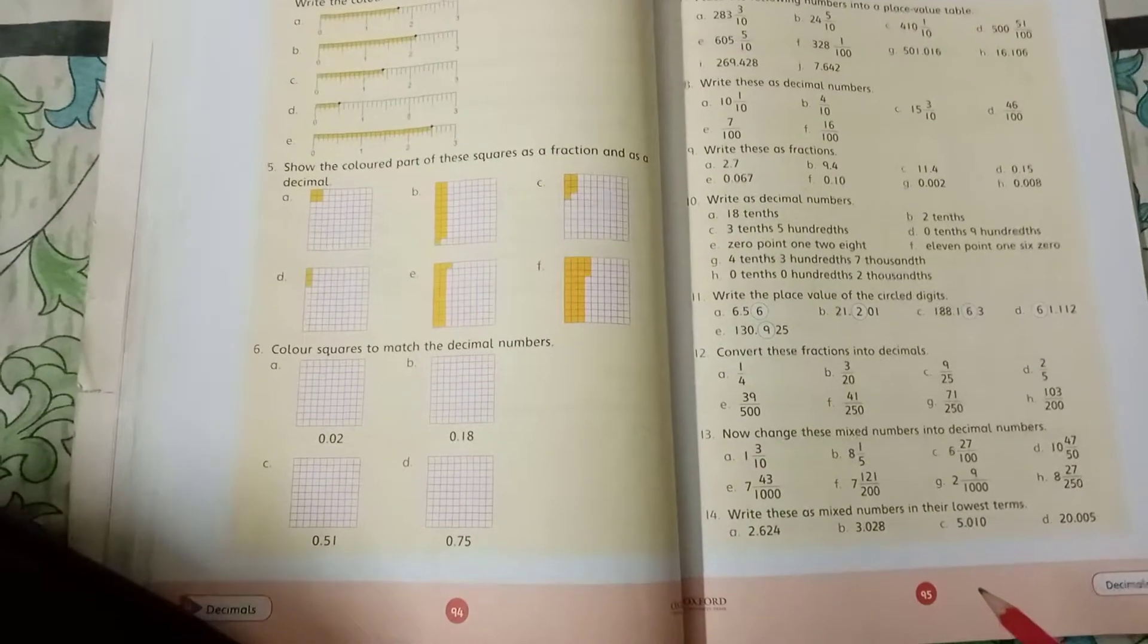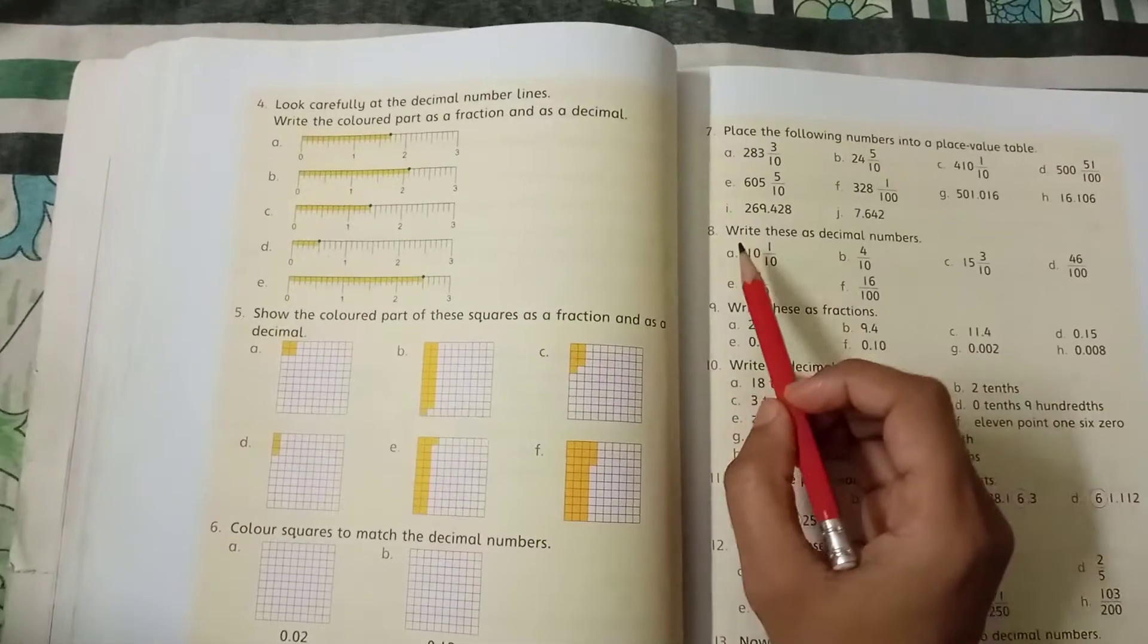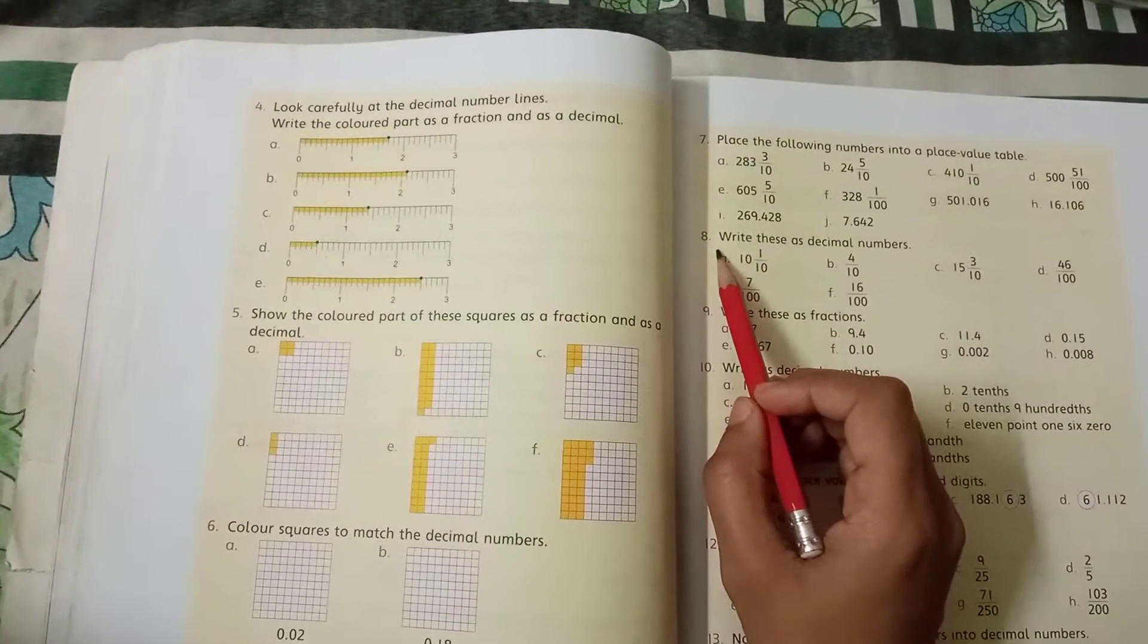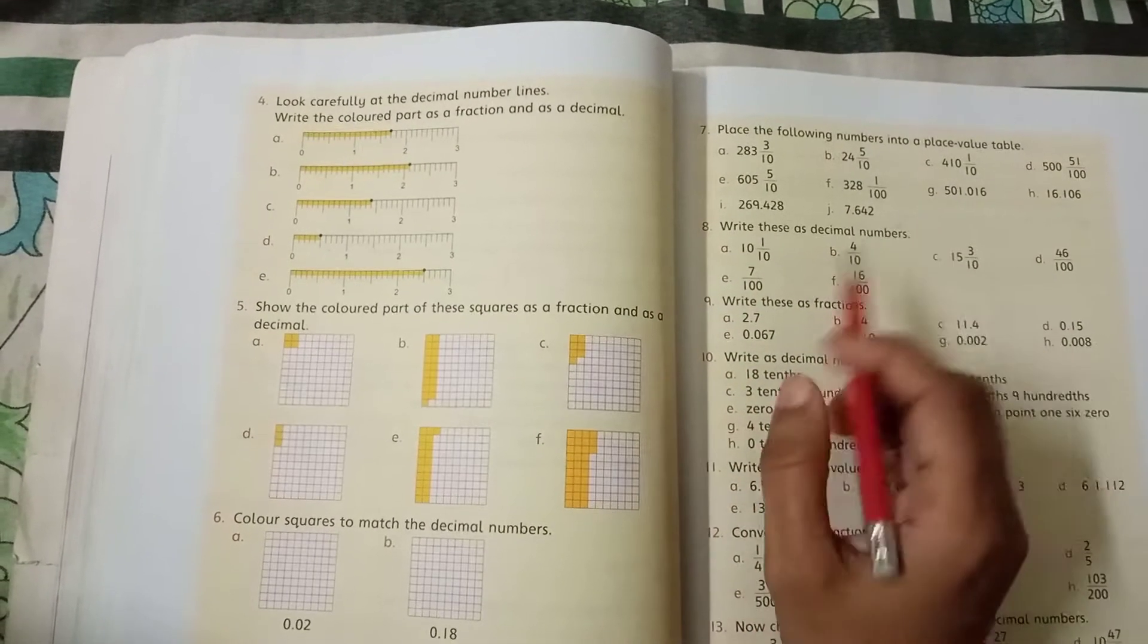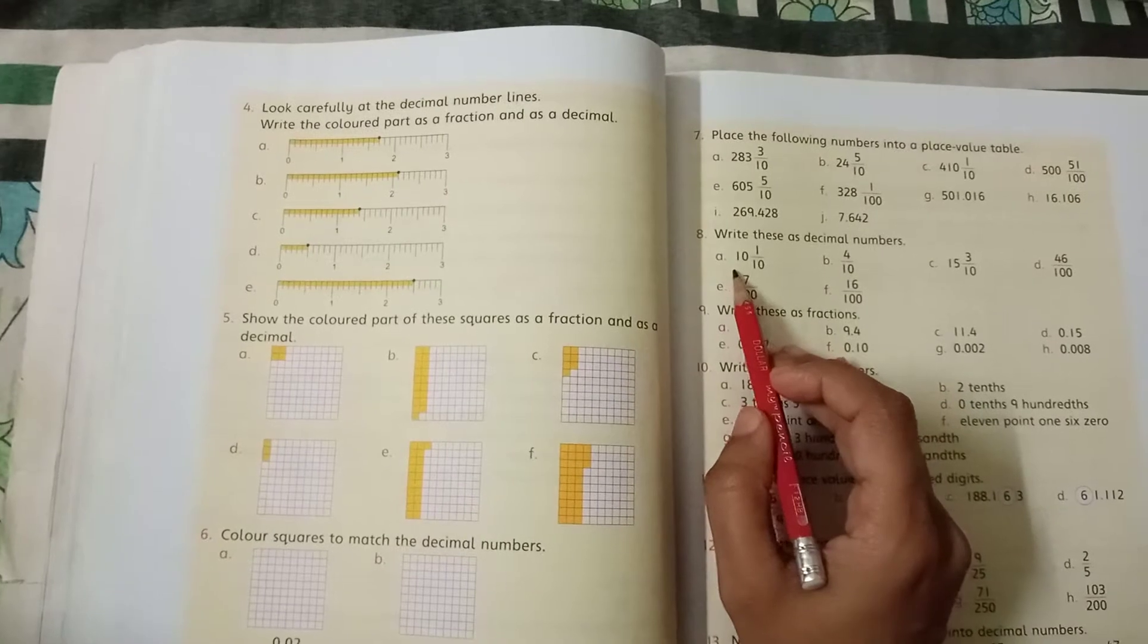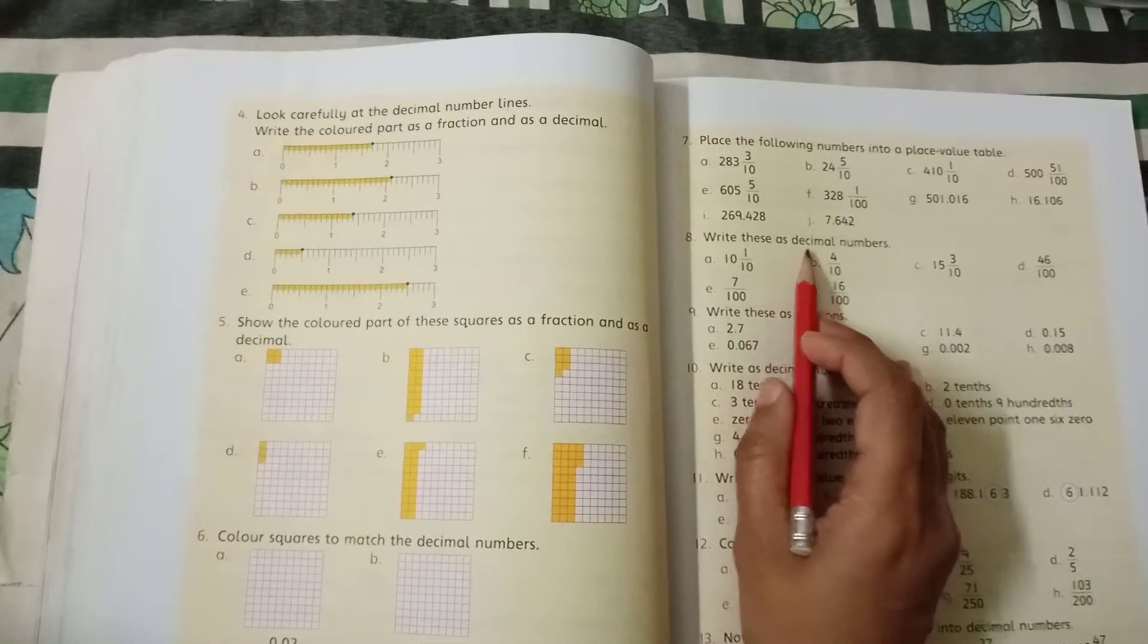First of all, maths books page number 95. Today we will do question number 8 of exercise number 4a. The question is write these as decimal numbers. This question is written in fraction form. We will write it in decimal numbers.